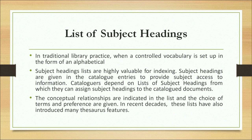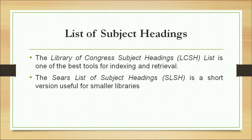The conceptual relationships are indicated in the list, and the choice of terms and preferences are given. Recently, these lists have also introduced many features of thesaurus. Two commonly known examples are: first, Library of Congress Subject Headings; second, Sears List of Subject Headings — a shorter version usually used by libraries with a small collection.